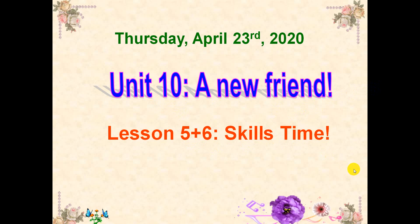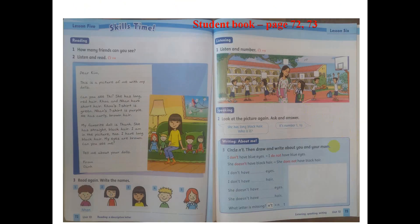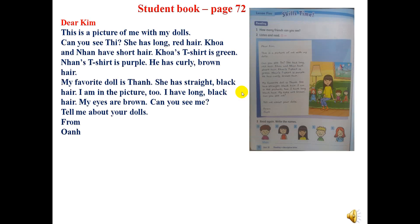Now let's start. We open pages 72 and 73 of the student book. Hôm nay cô và các con tiếp tục học Unit 10, bài 2 và bài 3. Bây giờ các con mở sách ra, open page 72. Đây là bài đọc ở trong sách. Bây giờ các con sẽ nghe và đọc theo, tìm hiểu xem bài đọc này nói về nội dung gì.